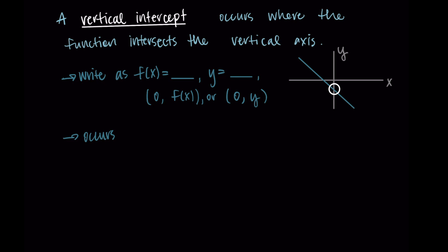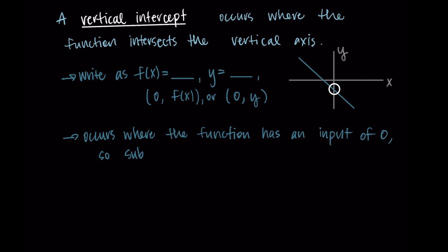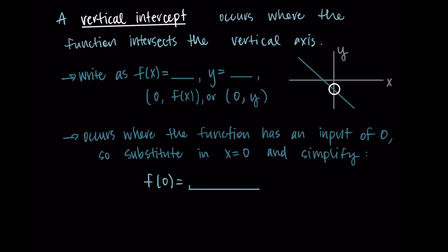Vertical intercepts have an input of zero — we don't have any left or right movement, we're just at zero on the x, and then it is intersecting somewhere on the y. So vertical intercepts occur specifically where the function has an input of zero, meaning we substitute x = 0 and then simplify. So we have f(0) equals — we substitute zero in for x — and then simplify to get our solution.